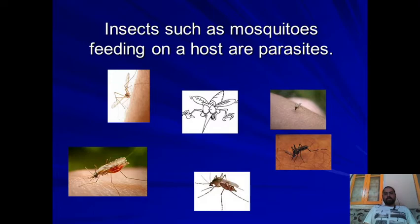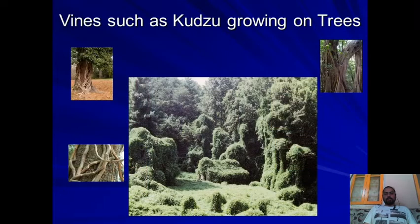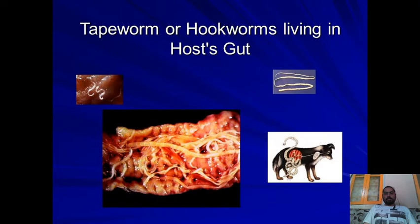Mosquitoes feeding on the host are also parasites. Vines of Kudzu trees growing on other trees is another example. Tapeworms or hookworms living in the host's gut are parasites surviving inside animals — they benefit from the host.